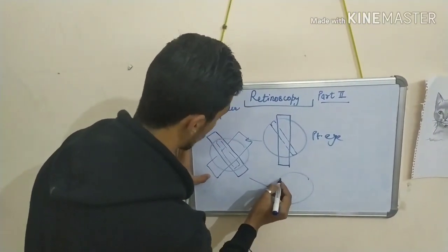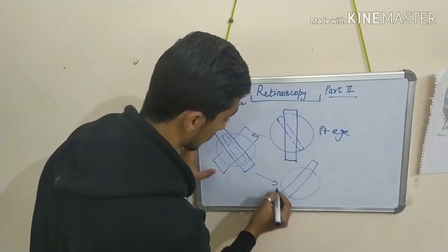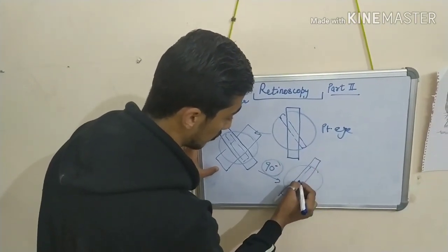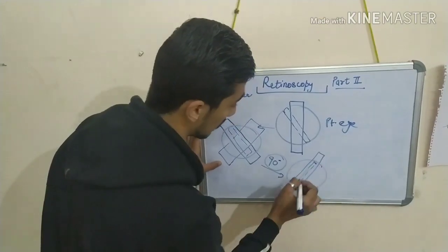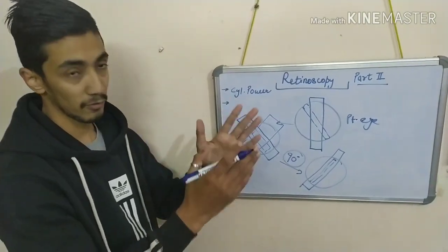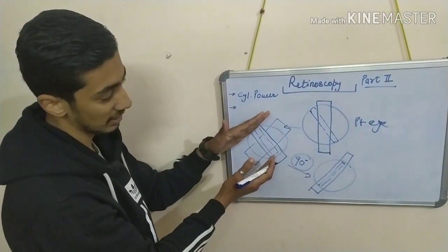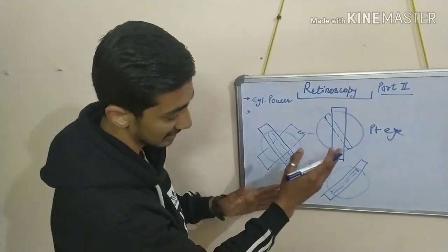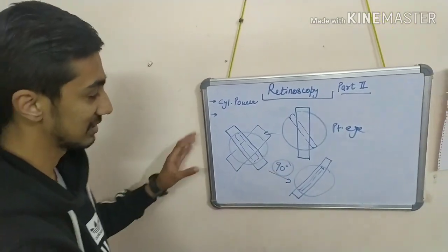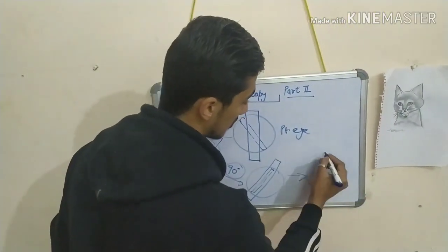Now, this is like this. You neutralize this meridian. Now you move the slit 90 degrees. And simply, you find that there is a movement. What happens in a cylindrical patient? They have power in two different meridians. First, you neutralize one meridian, then you rotate the slit 90 degrees apart and find that there is also a movement. You simply neutralize it with a trial lens, and when both meridians are neutralized, you get the power.